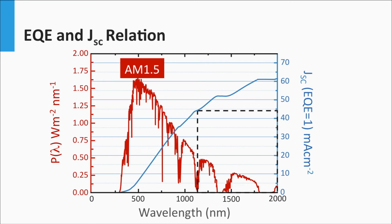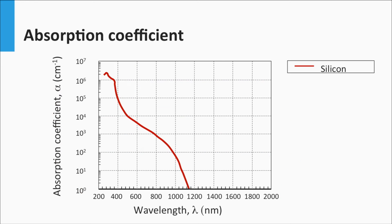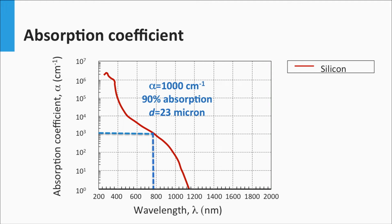Let's consider the design rules for solar cells as introduced in week 3. Starting with spectral utilization: a band gap of 1.12 eV means that in theory we can generate a maximum short-circuit current density of 45 mA per square centimeter using crystalline silicon. For the third design rule, light trapping, at a wavelength around 800 nm, crystalline silicon has an absorption coefficient of 1000 per centimeter. Using Lambert's law, to realize 90% absorption of light intensity at 800 nm requires an absorption path length of 23 microns.